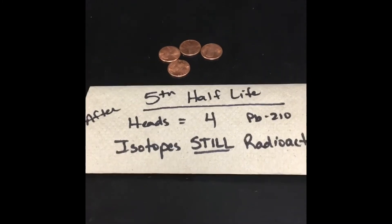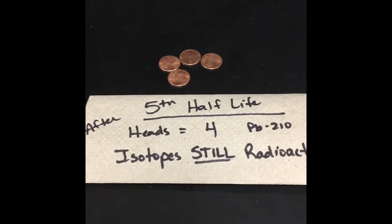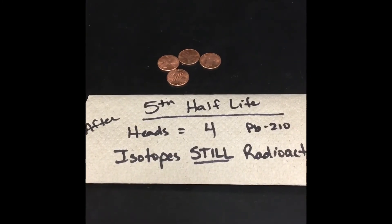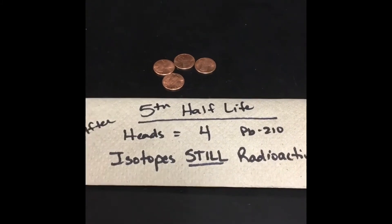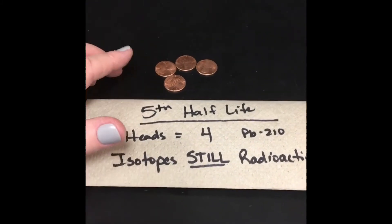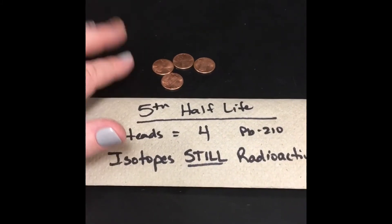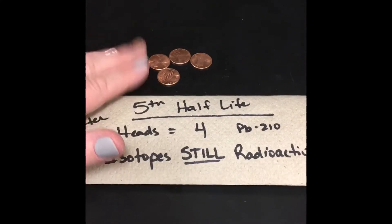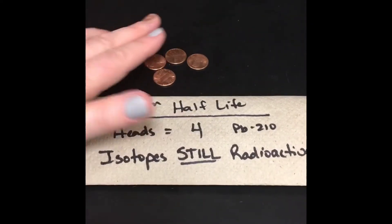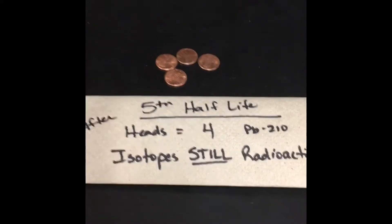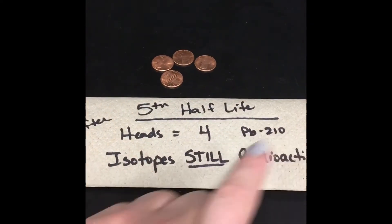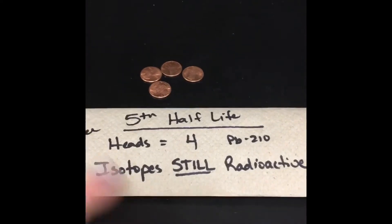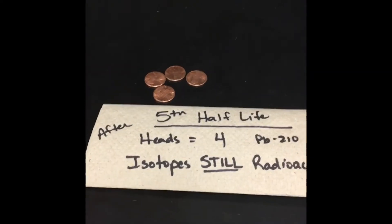Another 22-year time warp, and now we are at the end of our fifth half-life for our sample. Remember, we started out with 100 radioactive isotopes. Now we're down to just four. So there were four Lead-210 isotopes still radioactive at the end of the fifth half-life.